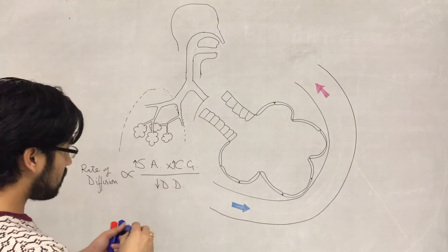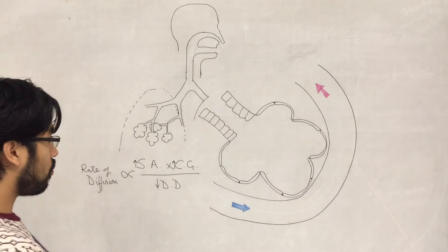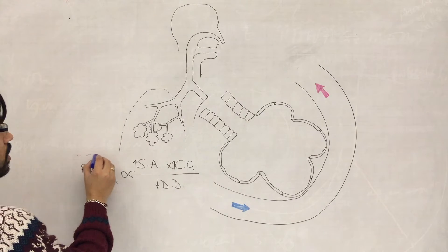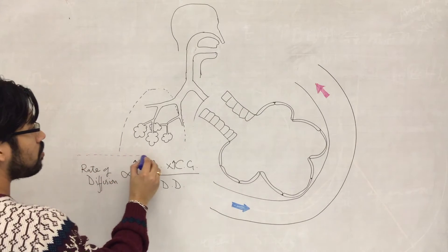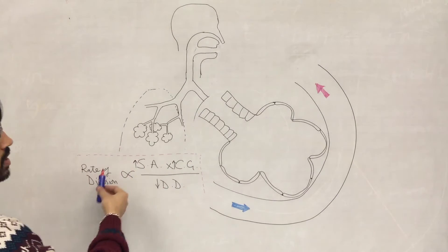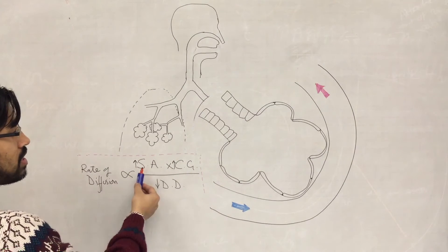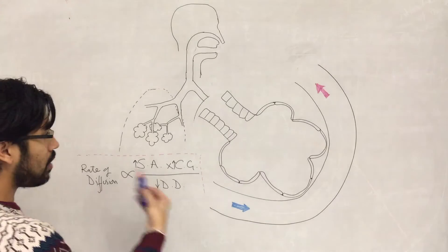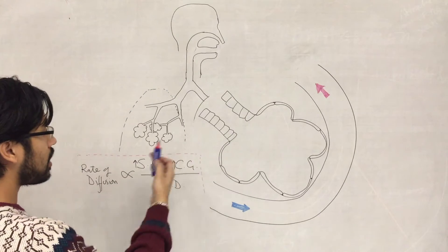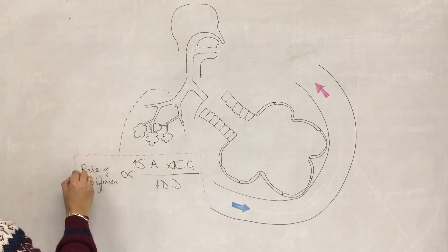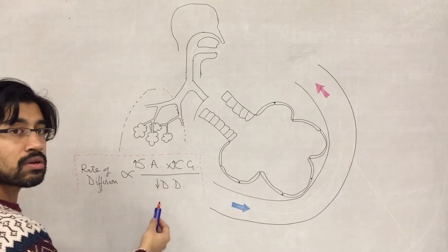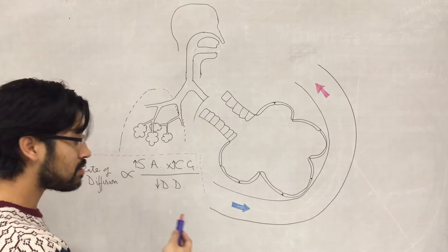Now that we've summarized Fick's Law, we need to look at how the lungs achieve those things: how do the lungs achieve a high surface area, how does it maintain its concentration gradient, and how does it satisfy the requirement of a smaller diffusion distance?